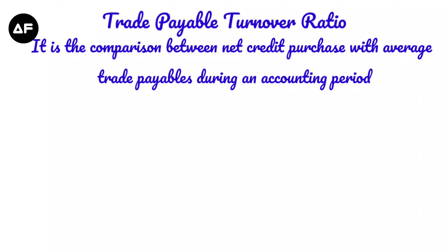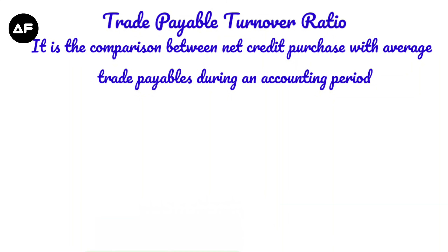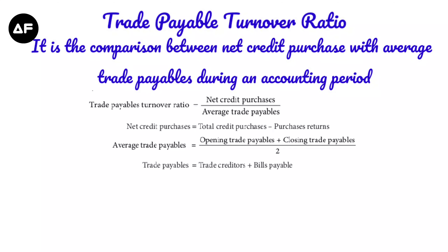Trade payables turnover ratio shows the comparison between net credit purchases and average trade payables — how much we purchased on credit and how much we have to pay back to our creditors. The formula is net credit purchases divided by average trade payables, where net credit purchases equals total credit purchases minus purchase returns. Average trade payables is opening trade payables plus closing trade payables divided by two, and trade payables equals trade creditors plus bills payable.